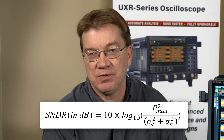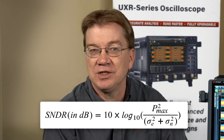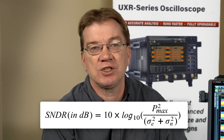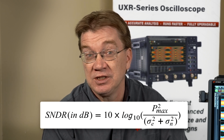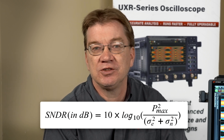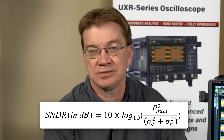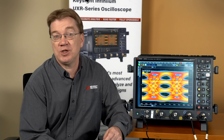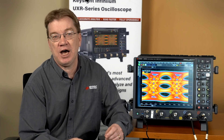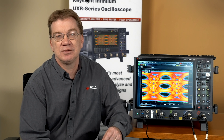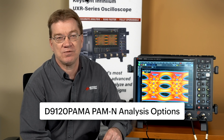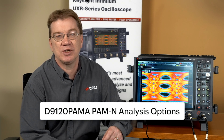Noise, or sigma-n, is measured on flat spots in the pattern. Distortion is measured by first determining the system's linear fit pulse response, and then determining the error due to nonlinear effects. SNDR is then expressed in dB. Keysight Technologies' Infinium UXR series oscilloscopes and optional PAM analysis functionality provide advanced analysis of PAM signals, providing even more insight into your design. Contact your Keysight sales representatives to get more details.